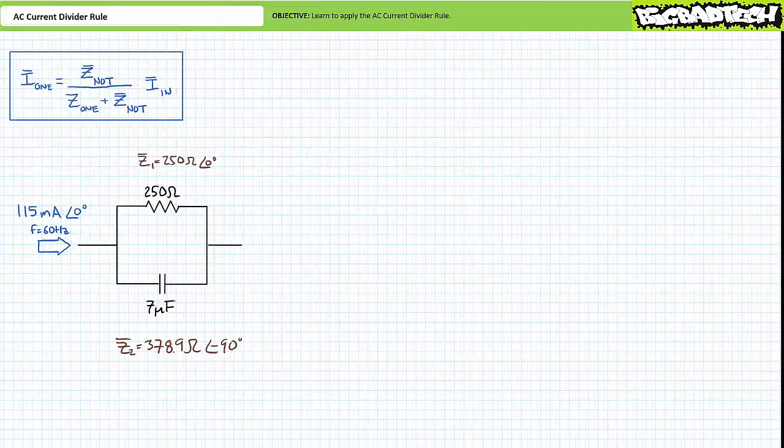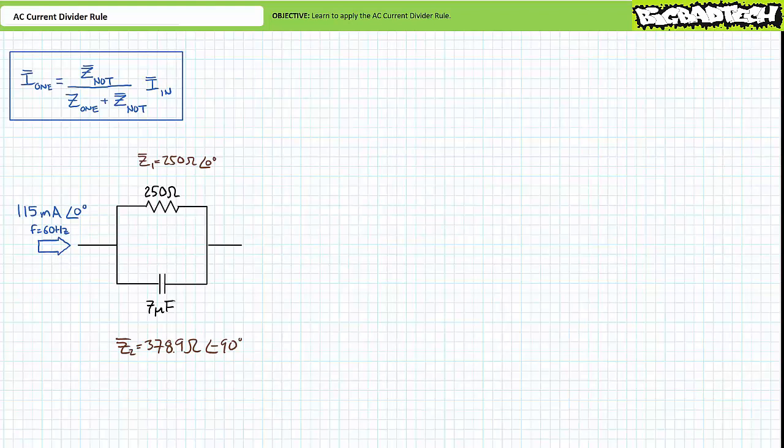The complex impedance of the 250 ohm resistor would be 250 ohms at an angle of zero degrees — let's call this impedance Z1. The complex impedance of the 7 microfarad capacitor at an excitation frequency of 60 hertz would be approximately 378.9 ohms at an angle of negative 90 degrees — let's call this impedance Z2.